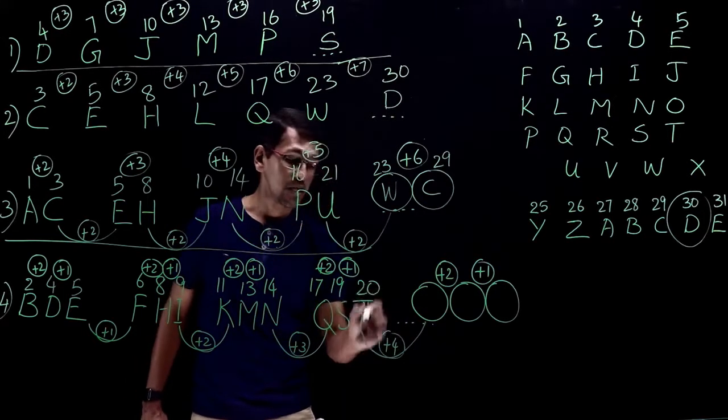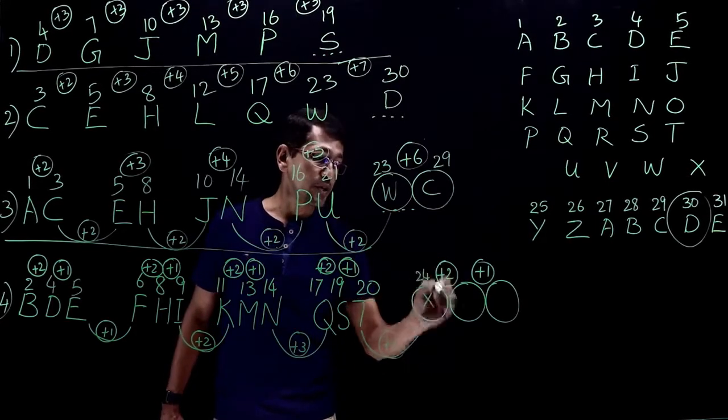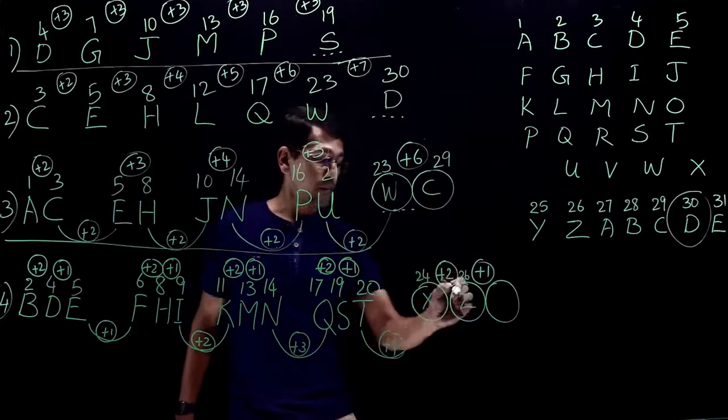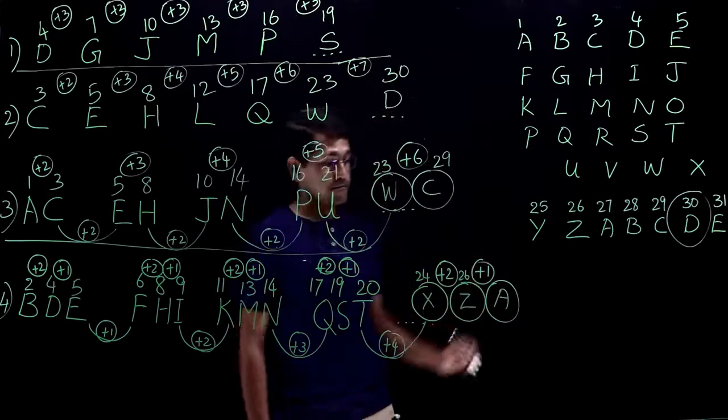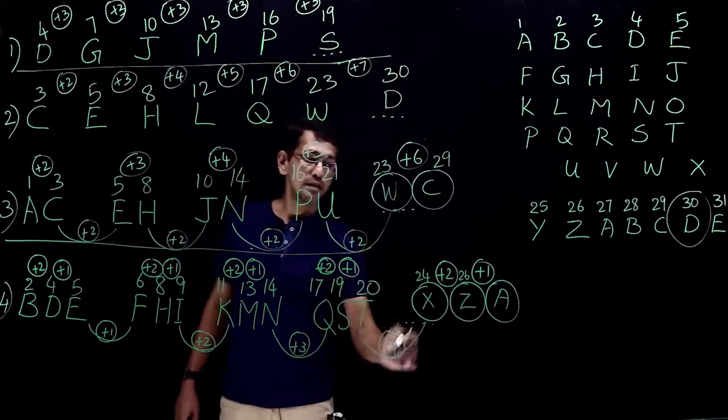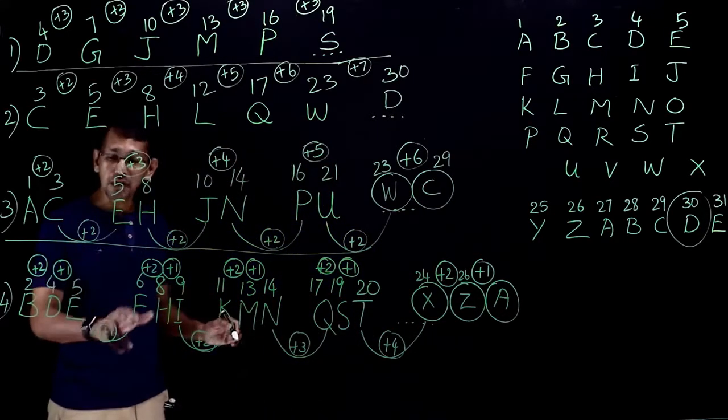So T is 20. 20 plus 4 equals 24, that is X. 24 plus 2 equals 26, that is Z. Plus 1 equals 27. 27 is A. So the answer is X, Z, A.